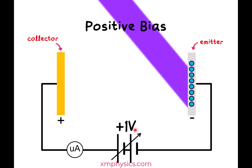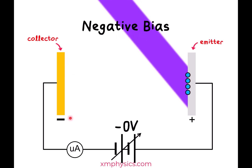We can stick a battery into the circuit. If you arrange the battery such that the collector is at a higher potential than the emitter, we say that we have put a positive bias on the collector. If you flip the battery around such that the potential of the collector is lower than the potential of the emitter, then we say that you have put a negative bias on the collector.